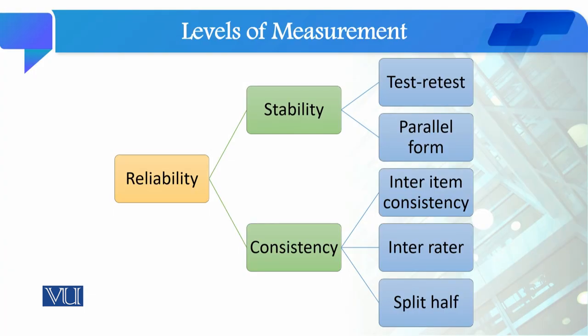If I talk about the types of reliability, there are two main types: stability reliability and consistency reliability. Under stability reliability, there are three types — inter-item consistency, inter-related reliability, and split-half reliability.